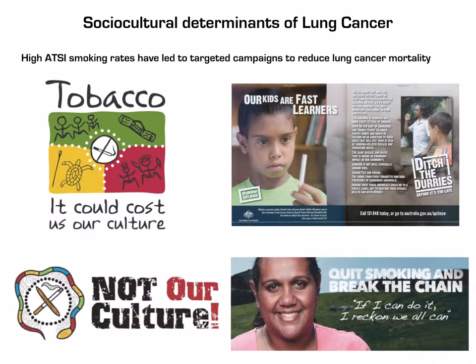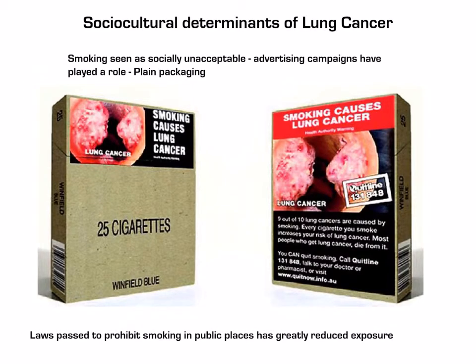Some of the more recent targeted campaigns are the Ditch the Durries campaign and the Break the Chain campaign. Both encourage Indigenous people to empower others in their community to reduce the amount of smoking. Smoking is seen as socially unacceptable, and advertising campaigns, as well as plain packaging, have played a role in that — making people think twice about smoking. Laws that prohibit smoking in public places have also greatly reduced exposure, affecting all of society.